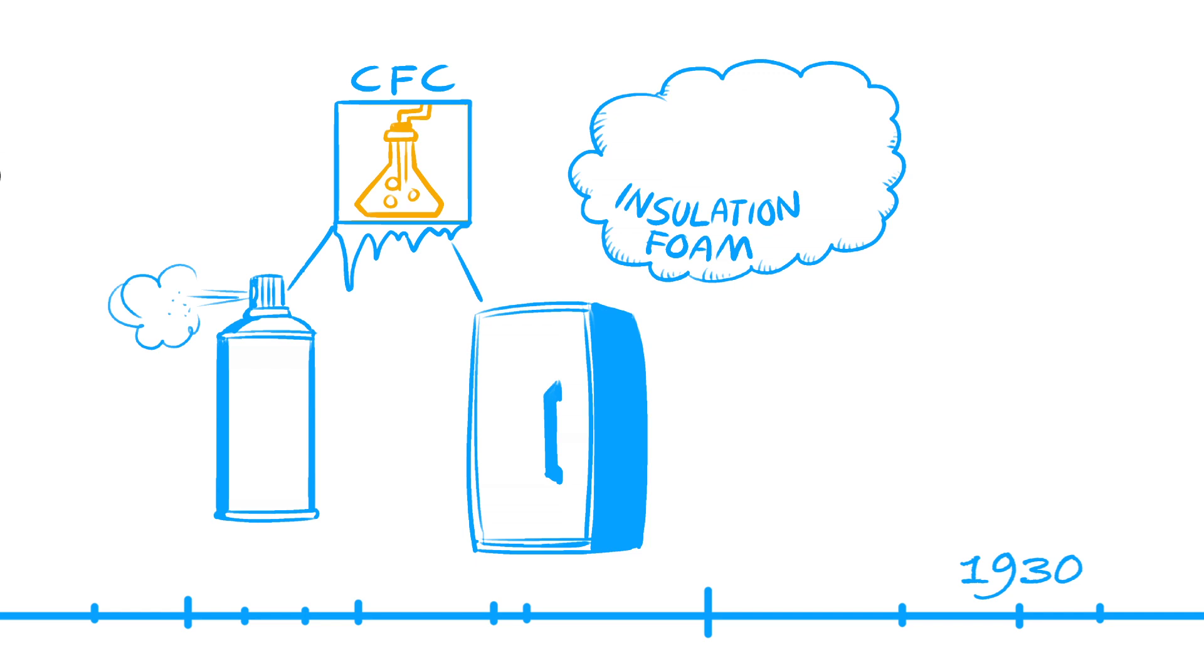The synthetic refrigerants were propagated as safety refrigerants because they were easier to handle. From the 1930s onwards, their use increased in new refrigeration plants.